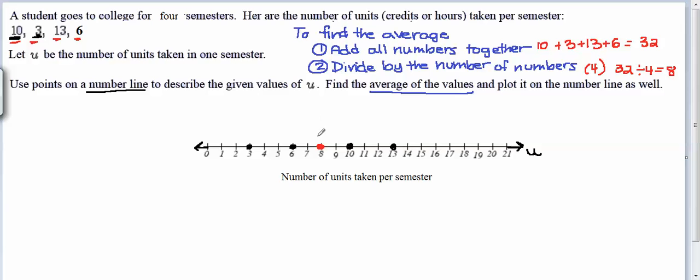So we could also denote it by hand by writing in and saying, this is the average value. Note for the hand drawing that I've done, it's important to denote this was the average because the label told me it was the number of units taken per semester. So someone reading this graph might have thought that there was a given semester when the student only took 8 units. In fact, that's not true. We need to label that as the average to indicate this 8 is telling us the average.